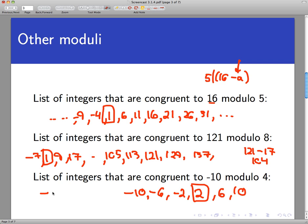And again, you can see that 2 and negative 10 really are congruent modulo 4 because their difference is negative 12, which is a multiple of 4.